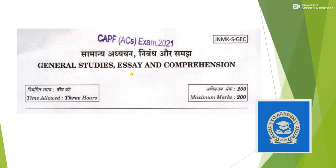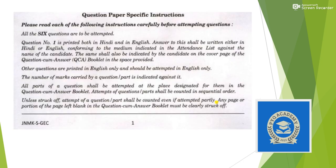This is a sample paper from the CAPF AC examination 2021. The paper is titled 'General Studies, Essay and Comprehension.' As the name suggests, it covers essay, general studies content, and reading comprehension. The total duration is three hours and the maximum marks is 200. There are a total of six questions to attempt.